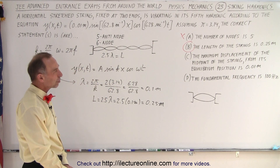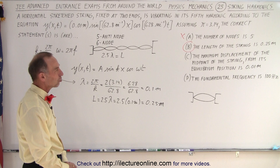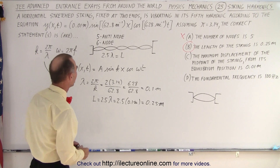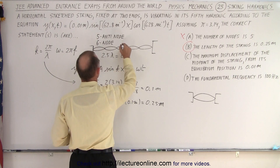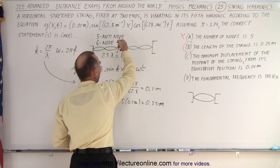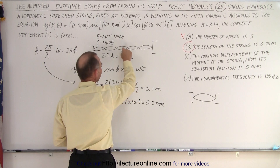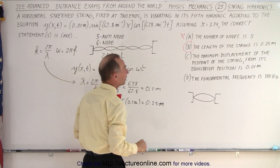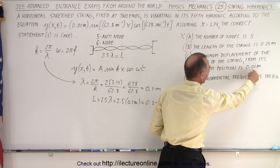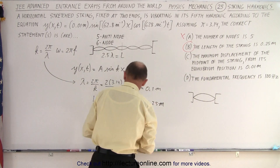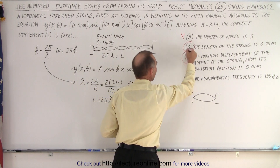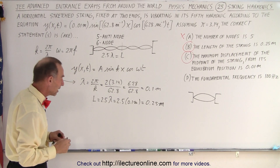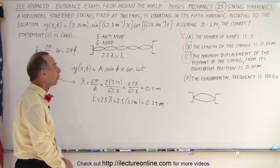Answer C states the maximum displacement of the midpoint of the string from equilibrium is 0.01 meters. The midpoint of the string is where an antinode occurs, so the maximum displacement of the antinode equals the amplitude 0.01 meter. Yes, 0.01 meter is indeed correct — answer C is correct.